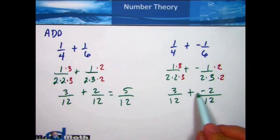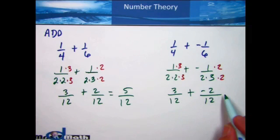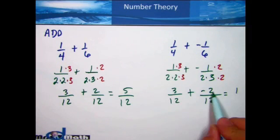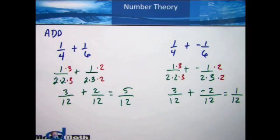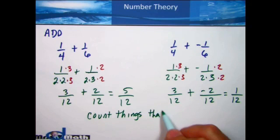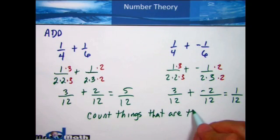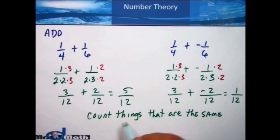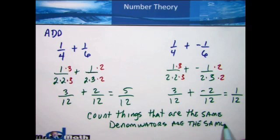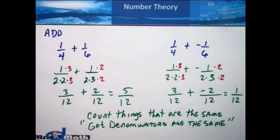I have 3 twelfths plus negative 2 twelfths. Adding 3 plus negative 2 — a positive plus a negative — you subtract and give it the sign of the larger absolute value. 3 minus 2 is 1, and 3 is the bigger absolute value, so the answer is 1 twelfth. Remember, addition means to count things that are the same, and here we're counting fractions. What makes them the same is the denominators must be the same. That's the game when we're adding fractions, whether positive or negative.